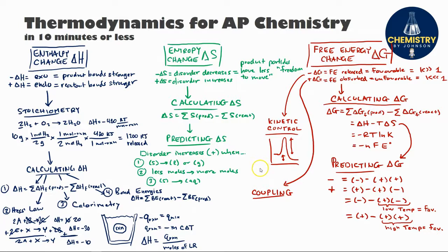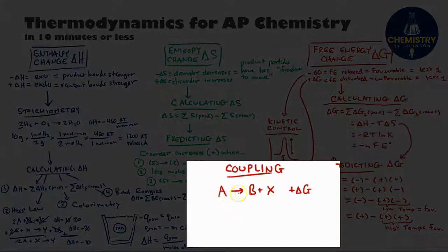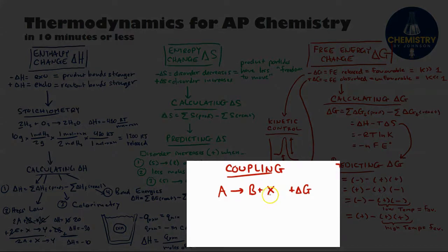The other scenario involves a positive delta G reaction that's not favorable, but a way that you can force it to take place is via something called coupling. Let's say I want to perform this reaction A turns into B and X to produce this product X. The delta G is positive, which means this reaction will not happen on its own. Well, I could force this first reaction to happen by coupling it with a second reaction that shares a common intermediate with the first one here that would be particle B.